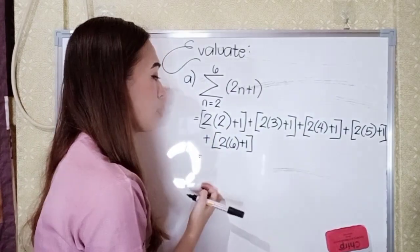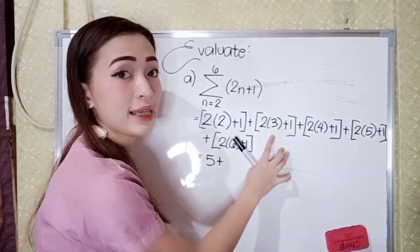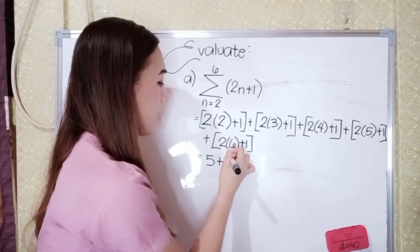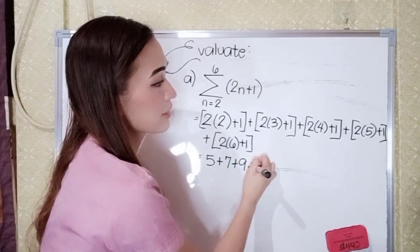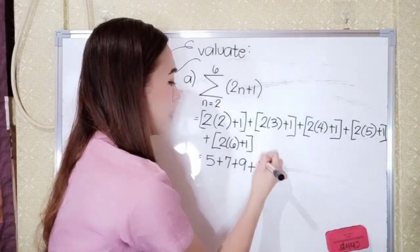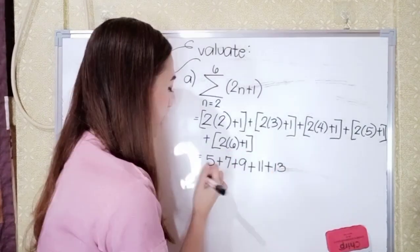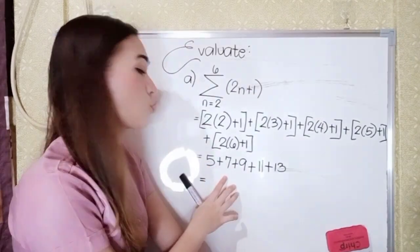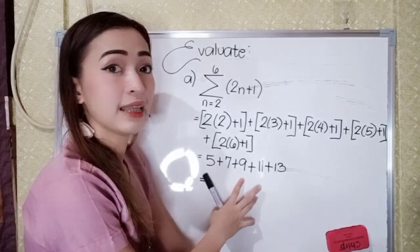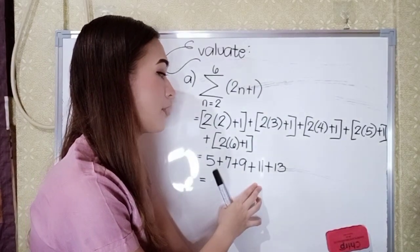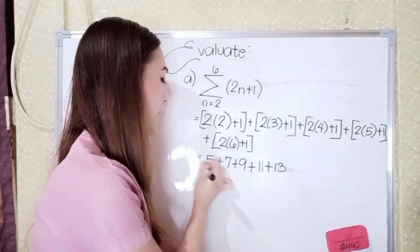Next, let's perform the operation. 2 times 2 is 4, 4 plus 1 is 5. Plus 2 times 3 is 6, 6 plus 1 is 7. Plus 2 times 4 is 8, 8 plus 1 is 9. Plus 2 times 5 is 10, 10 plus 1 is 11. Plus 2 times 6 is 12, 12 plus 1 is 13. Now let's add: 5 plus 7 is 12, 12 plus 9 is 21, 21 plus 11 is 32, 32 plus 13 is 45. So the answer in letter A is 45.